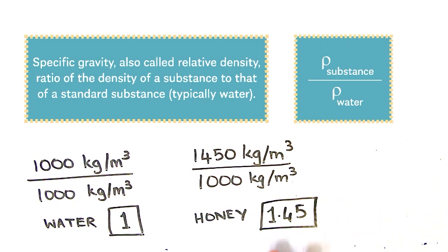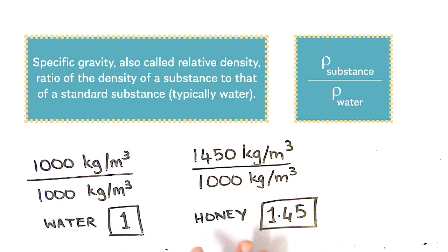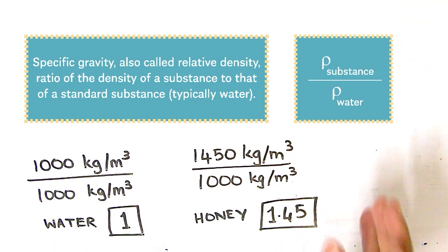Using specific gravity, we can easily compare density numbers against standard conditions. Honey is 1.45 times as dense as water. That is why we introduce the specific gravity concept — it makes density numbers easy to visualize and use in formulas.